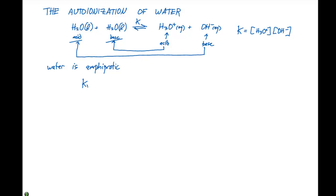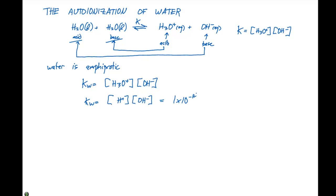This gives us a specific K that we refer to as KW, which is equal to the concentration of H3O+ times the concentration of OH−. We can also write this as the concentration of H+ times the concentration of OH−, and this is experimentally determined to be 1.0×10⁻¹⁴.